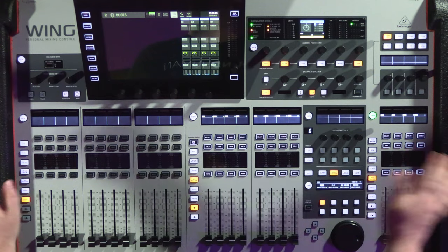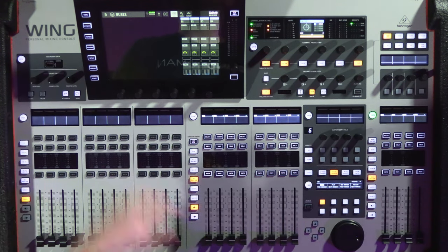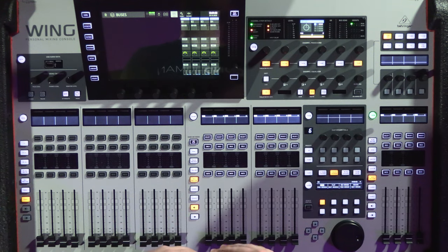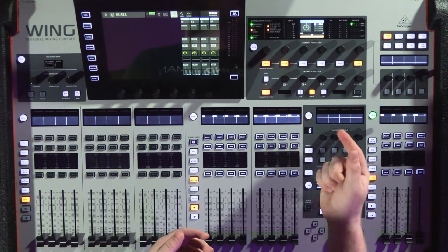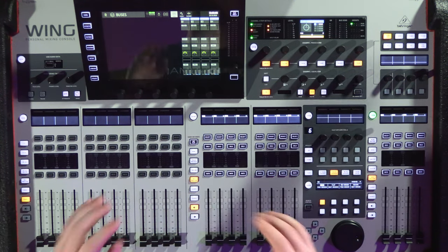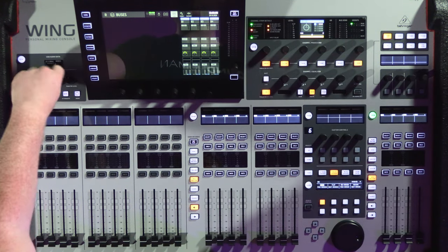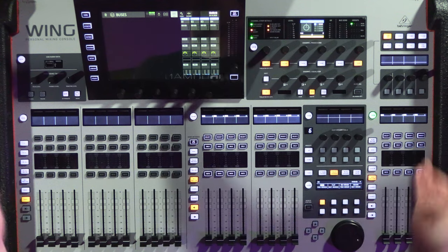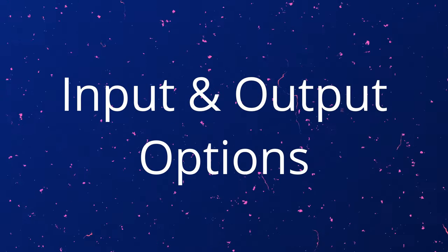The last section we'll talk about is the monitoring and talkback area. Right up at the top is our USB audio and data — you can play two-track audio out from the USB or save and restore scenes to the console from there. Just below that we have talkback A and talkback B, which can be latched or unlatched, along with their talk level. To the right of that we have our headphone level, and then our monitor level for speakers coming off the console itself, which we can dim or mono-sum.